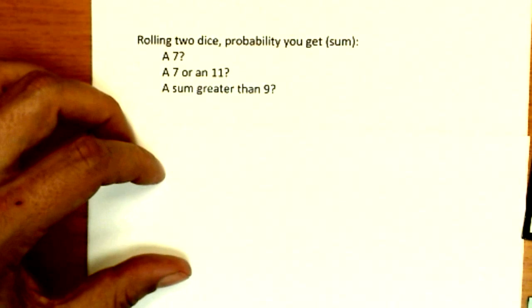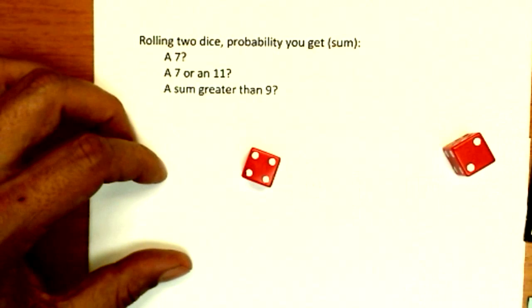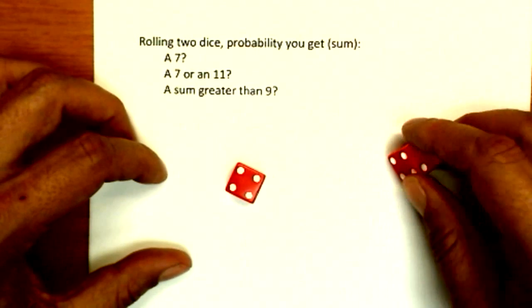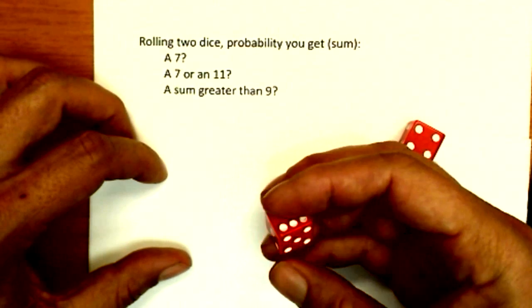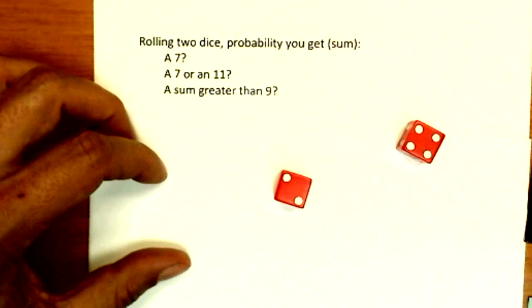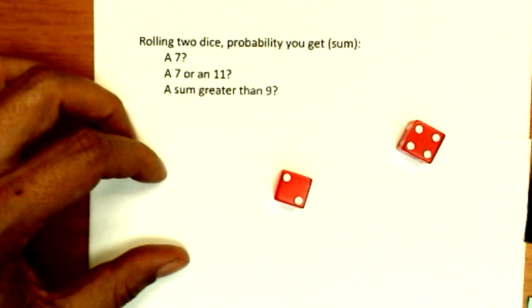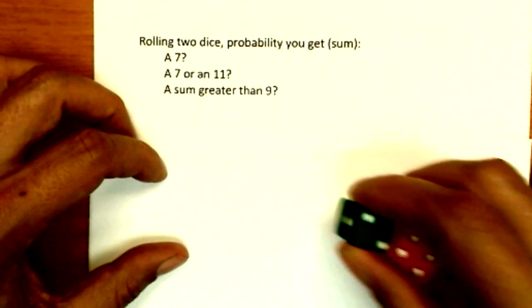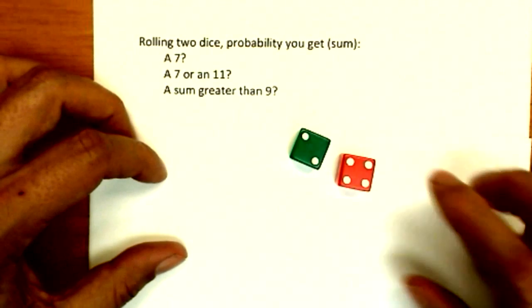Now one thing that can cause some confusion when you're looking at dice points is that the two dice can look the same, right? So I got a six here, but is a two on this die and a four on this one the same as a four on this one and a two on this one? I mean, if we're looking at the sum, they look the same. It's six either way, but obviously that's two different ways of actually getting the six. So to make that clear, I'm going to switch the color of the dice. We'll use a green and a red one.